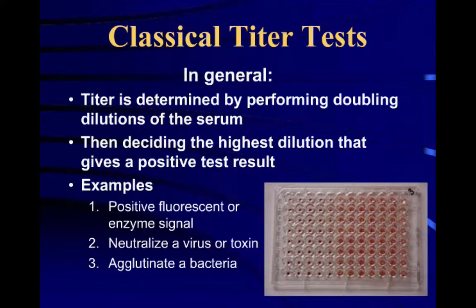You need to decide what the highest dilution is. If you can see this particular slide, you'll see that the first series of wells — out to about five or six wells — there's a red dot. These happen to be red blood cells, and that means that you have hemagglutination inhibition. This particular test is a real test we were performing for antibody to canine parvovirus — the hemagglutination inhibition test. As you get further out, the virus has agglutinated the red cells, so you know there isn't any antibody there. The antibody actually causes the inhibition of the agglutination because it reacts with the virus, and then the virus can't agglutinate.